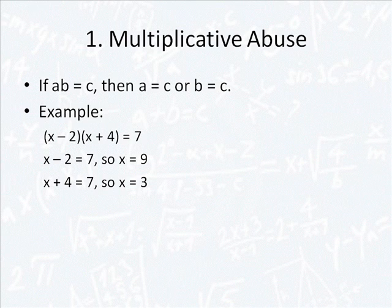I've seen students in pre-calculus and calculus go, oh well, the first factor is 7, x minus 2 is 7, so x is 9. Or the second factor is 7. Obviously this is wrong. If you try putting either 9 or 3 back into your original solution, you're not going to get 7 as your product.